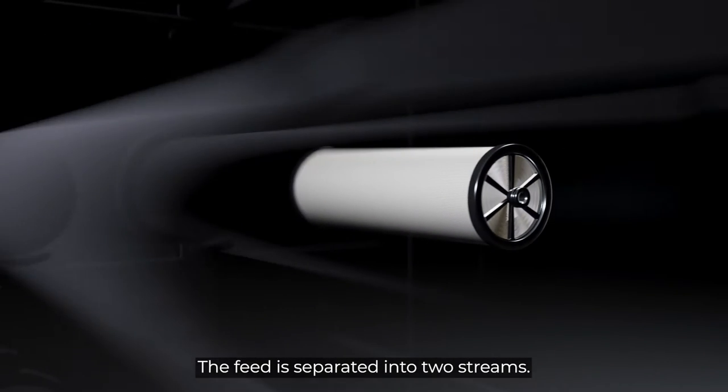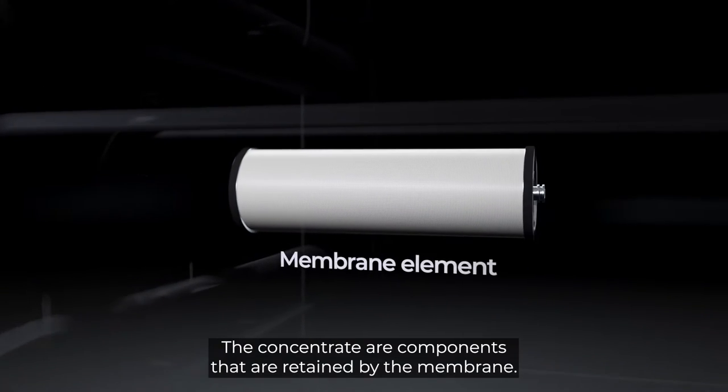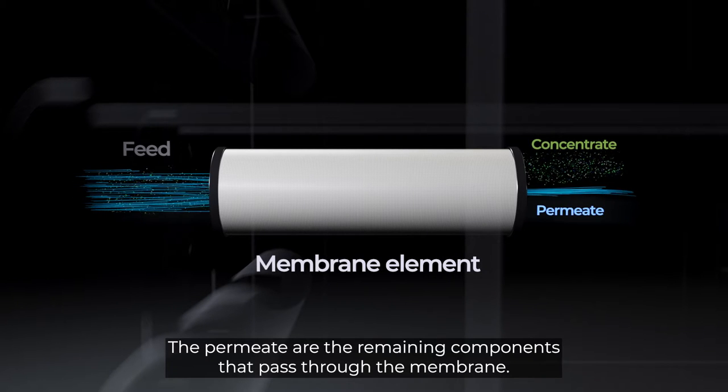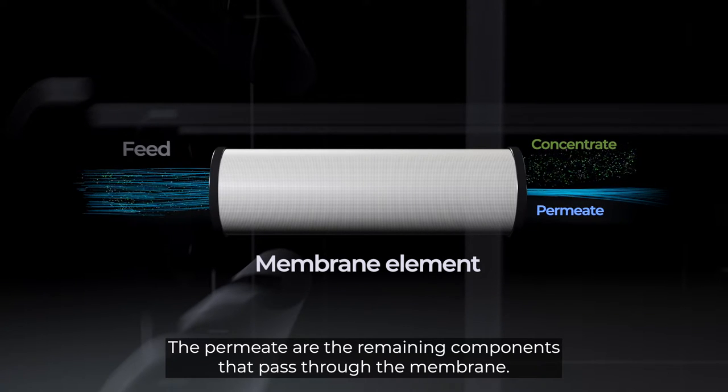The feed is separated into two streams. The concentrate are components that are retained by the membrane. The permeate are the remaining components that pass through the membrane.